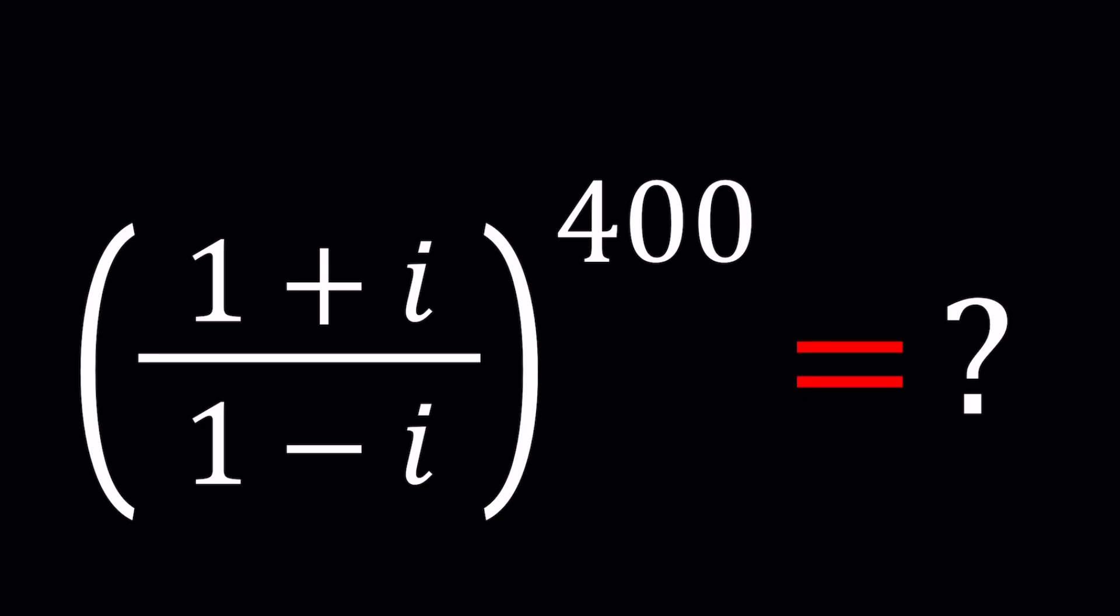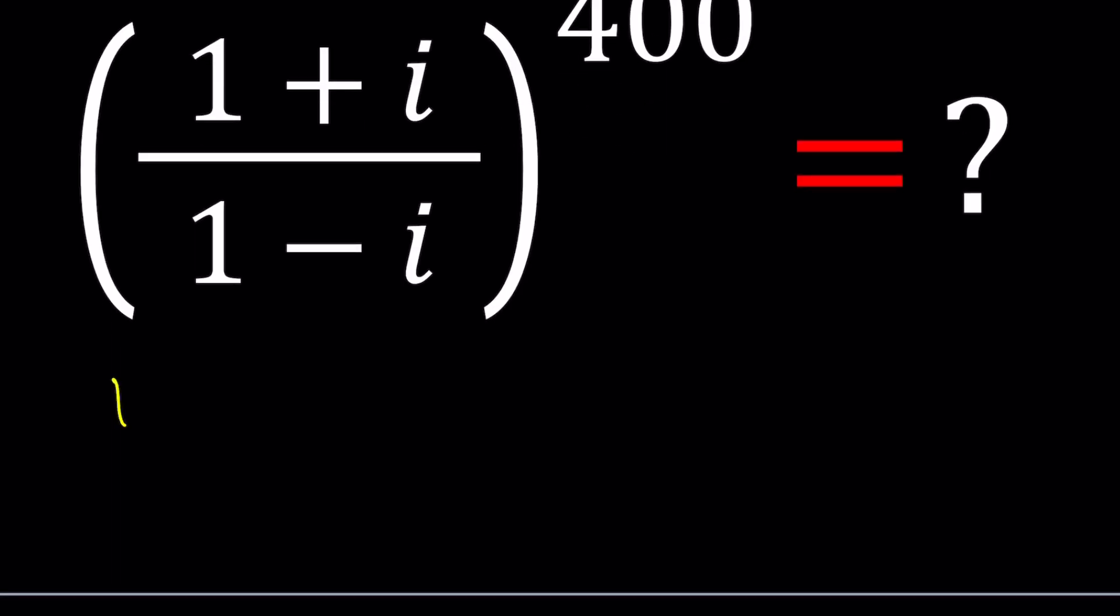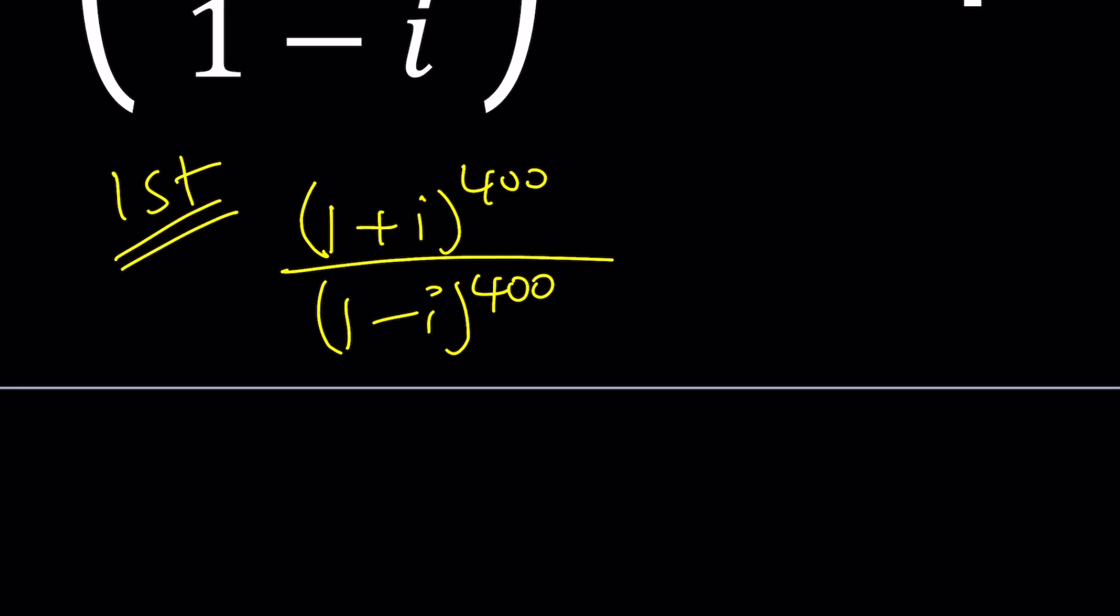Anyways, so let's start with the first method. To solve this problem, I'm going to consider the numerator and that denominator separately. So I'm going to raise this 1 plus i to the 400th power and 1 minus i to the 400th power. Now, obviously, you don't want to use the binomial theorem. I mean, do you? You're going to get 401 terms. I mean, you can do that, but that's going to take forever.